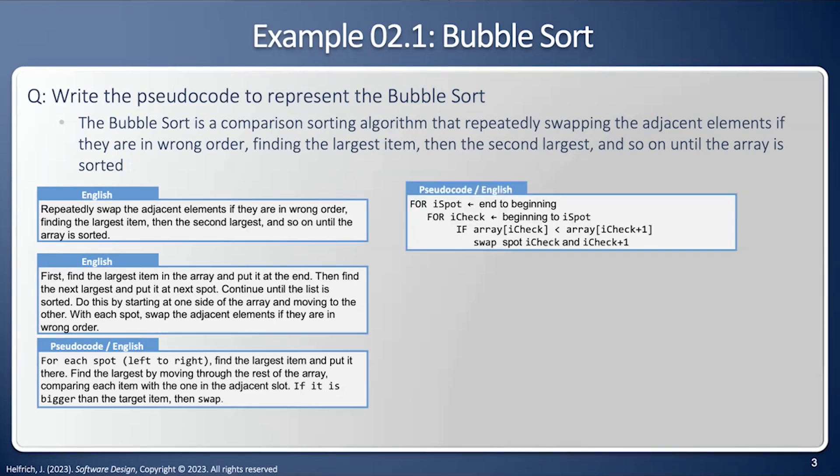Now we're going to use a little bit more pseudocode: for I spot, actually name the variable from end to beginning. End to beginning is kind of English. For I check, once again pseudocode, I have the actual variable name from beginning to I spot. And then if array of I check is less than array of I check plus one, that's very pseudocode. But then swap the spot, that sounds a little bit English. So I'm still a mixture between pseudocode and English.